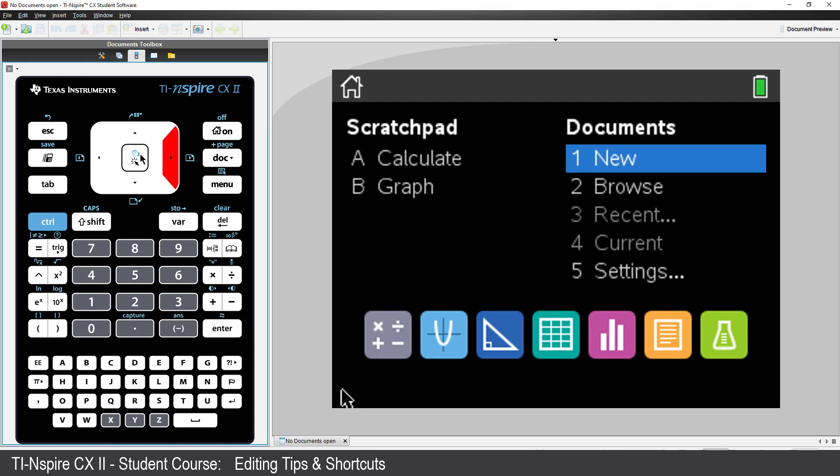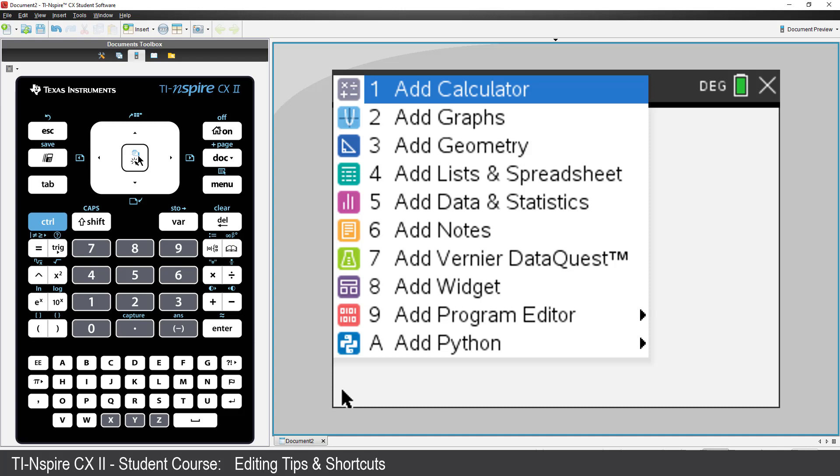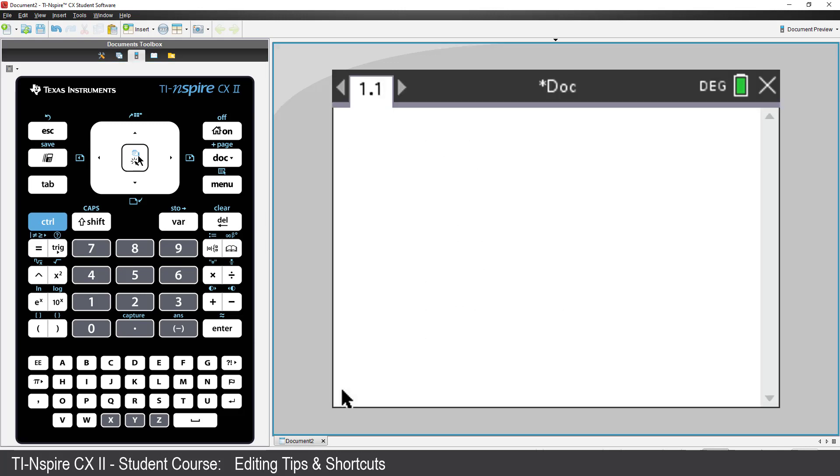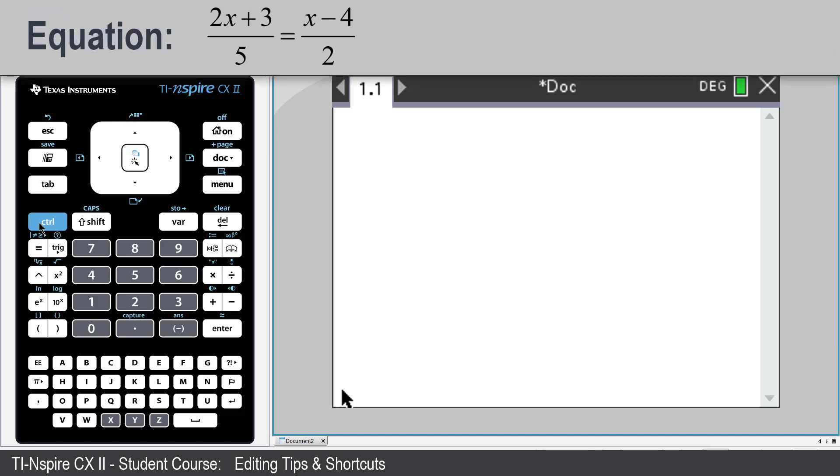Let's start by creating a new document. Insert a calculator application. Suppose you have a simple equation to solve. You could navigate through the menus to find the solve command, or you could just type your equation in: 2x plus 3 over 5 equals x minus 4 over 2.